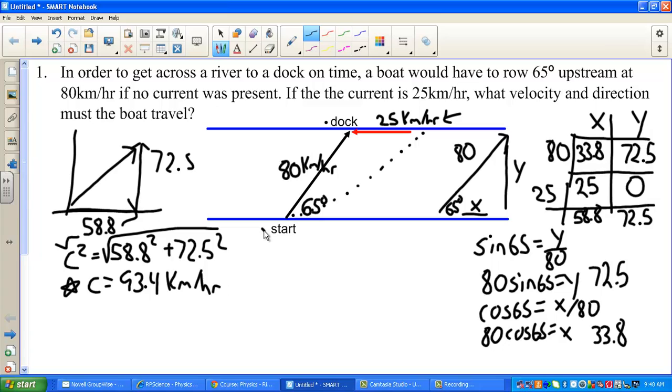I'll put a little star by that because I want to. And then I want to find angle theta here. I can use whatever I want with that. I'll go tangent. Tangent of theta is opposite, which was 72.5 over adjacent, which was 58.8.